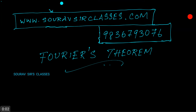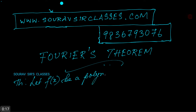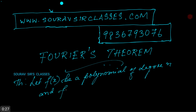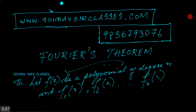Hello and welcome to Shorofsar's classes. Today we will learn about Fourier's theorem. Let f(x) be a polynomial of degree n, and let f1(x), f2(x), ..., fn(x) be its successive derivatives.